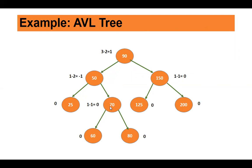Now come to node 70. Node 70 has one left child and one right child. So one left side minus one right side gives one minus one — the balance factor of 70 is zero. Moving up to node 50: the height of its left subtree is one, and for the right subtree take the longest path — that is one and two. So left subtree height minus right subtree height: one minus two gives minus one. The balance factor of 50 is minus one, which is a valid balance factor, so node 50 is balanced.